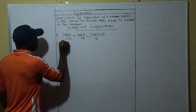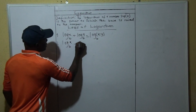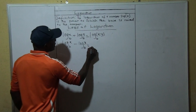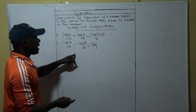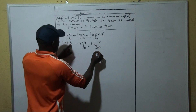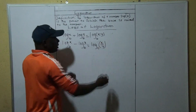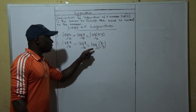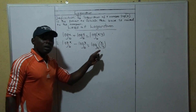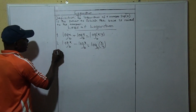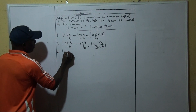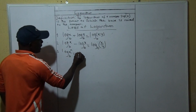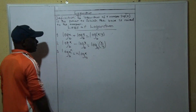The second law: log X base B minus log Y base B equals log (X divided by Y) base B. So if it is subtraction and the bases are the same, you write the base as a common base and divide. The third law: log of X raised to power N, base B, equals N times log X base B — the power comes down and multiplies the log.